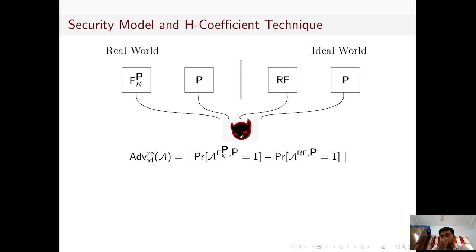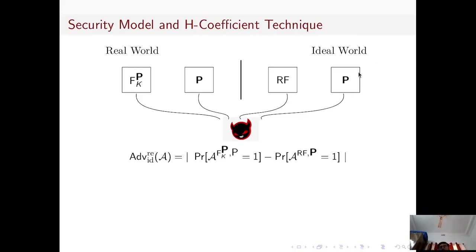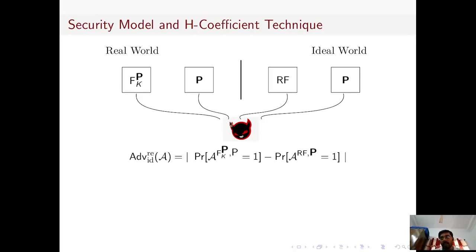We briefly go to the security model and the H-coefficient technique. The H-coefficient technique is a combinatorial tool to bound the distinguishing advantage of two random systems. Here, an adversary A interacts with either the real world or the ideal world. The real world consists of two oracles: F_{P,K} and the permutation P. The ideal world consists of two oracles: a random function and the permutation P. After interacting with the oracles, the adversary must distinguish whether it has interacted with the real or ideal world. We define the advantage of adversary A as the difference of these two probabilities.